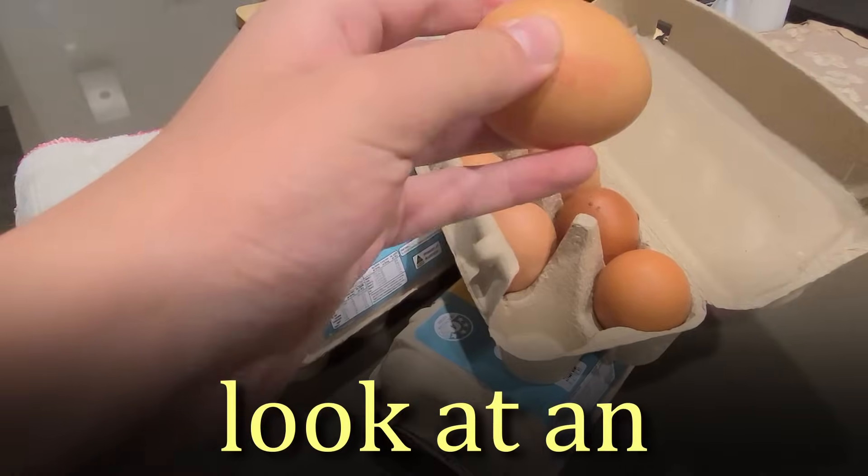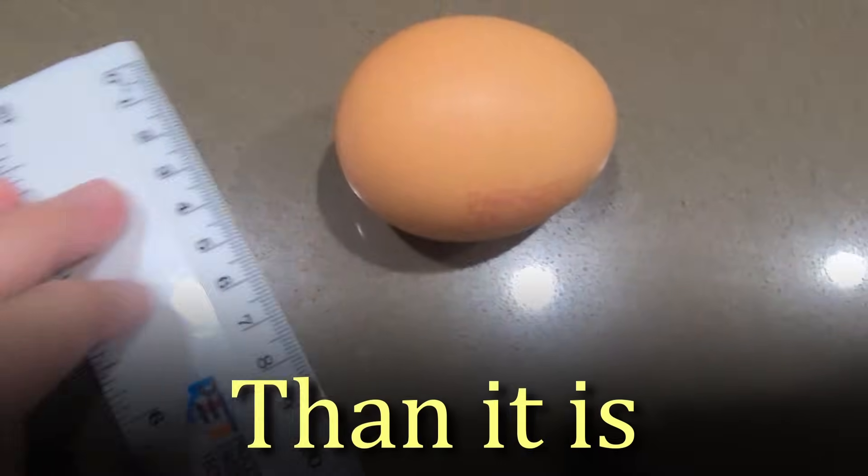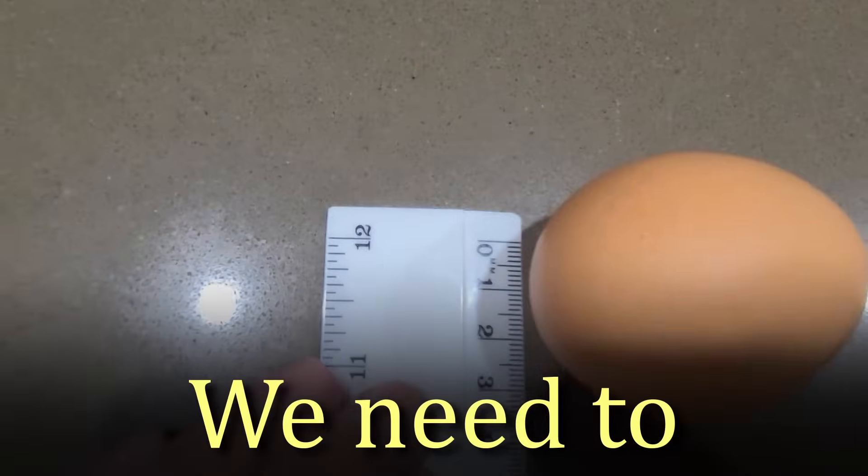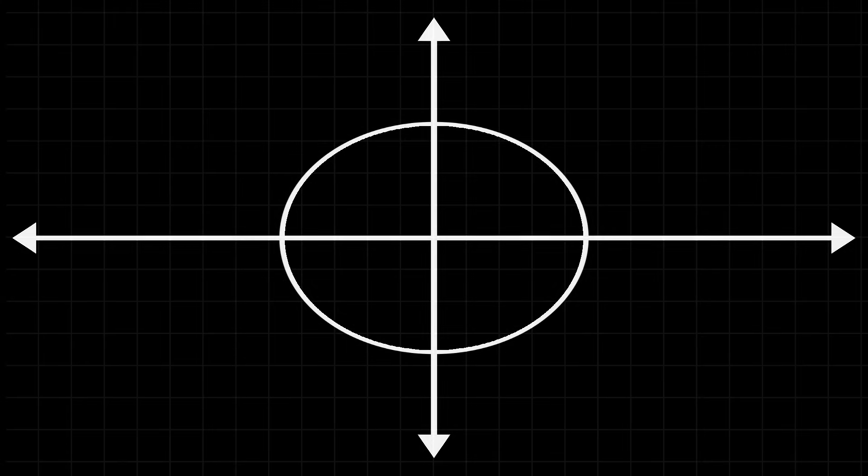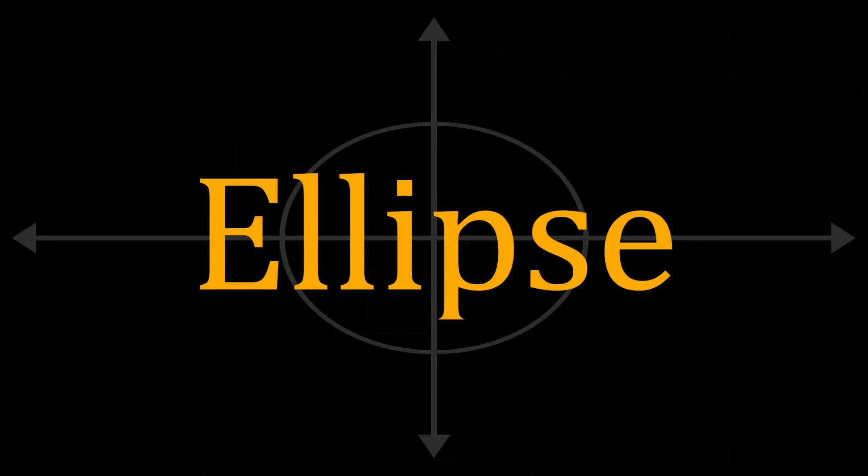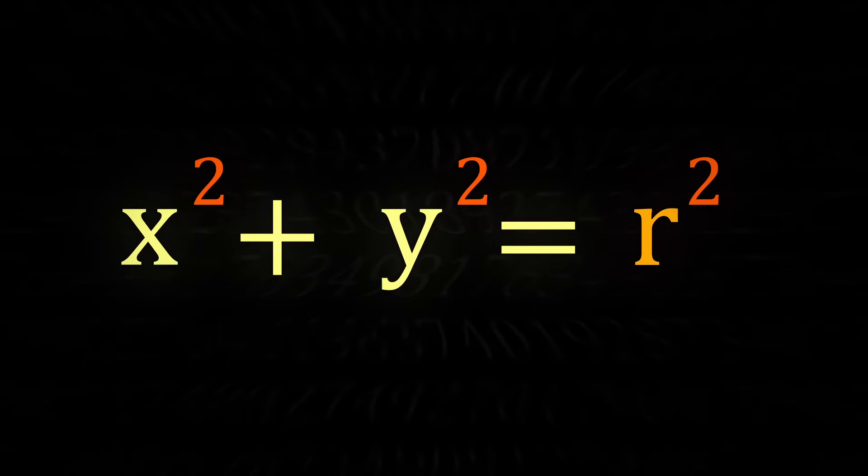If you look at an egg, it's actually taller than it is long, meaning that we need to stretch the circle in order to match the egg. We need the equation for a stretched circle, or an ellipse, which can be created by adding two extra constants, a and b.